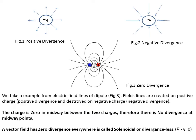In figure 1, the electric flux expands over the positive charge, giving positive divergence. In figure 2, the electric flux converges on the negative charge, giving negative divergence. In figure 3, we have an electric dipole. In an electric dipole, field lines are created on the positive charge and destroyed on the negative charge. The divergence is zero at the midpoint between the two charges. A vector field that has zero divergence everywhere is called solenoidal or divergence-free, meaning DEL·V = 0.